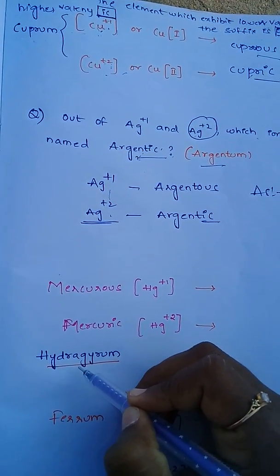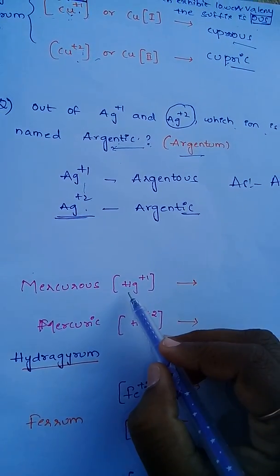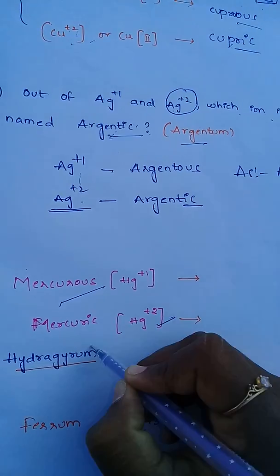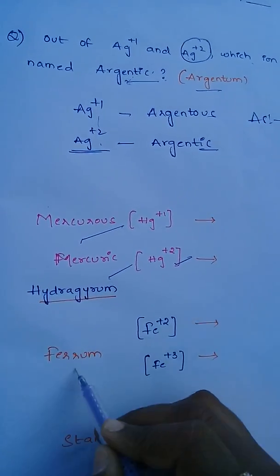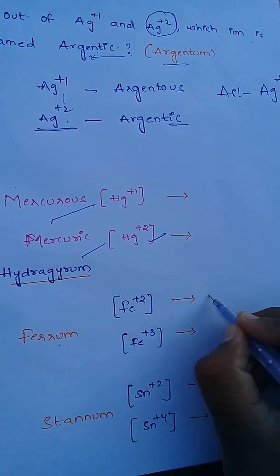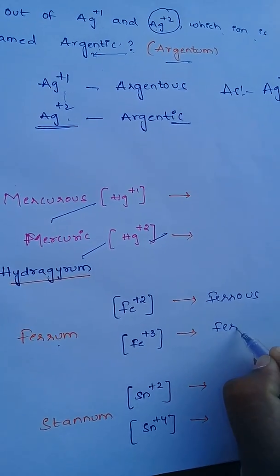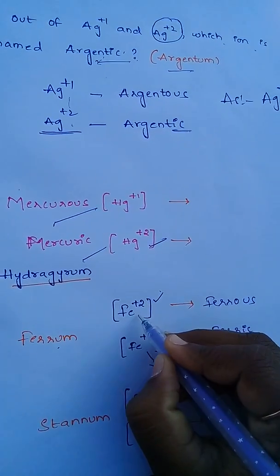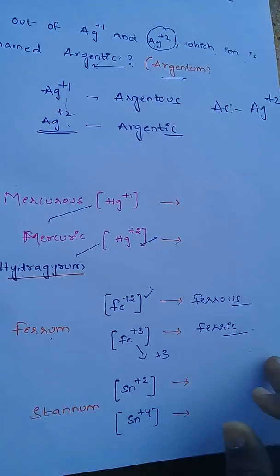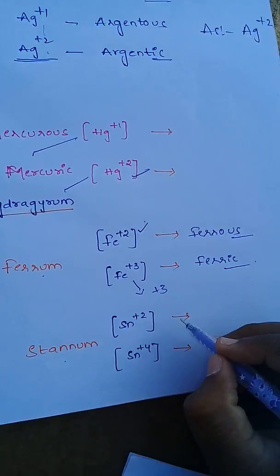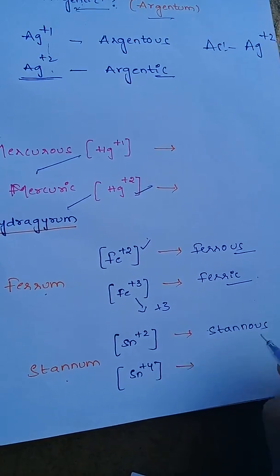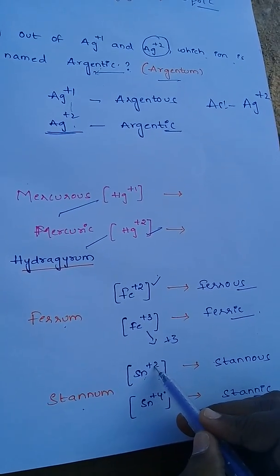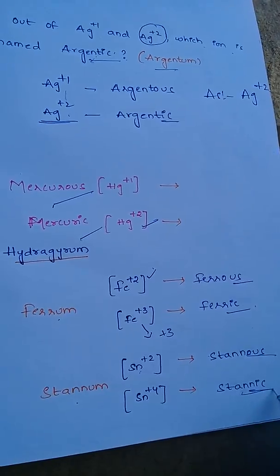The Latin name of Mercury is Hydrargyrum. Mercury with plus one oxidation state is called Mercurous, and higher oxidation state is Mercuric. Iron's Latin name is Ferrum: lower valency plus two gives Ferrous, and higher valency plus three gives Ferric. Tin's Latin name is Stannum: lower valency gives Stanous, and higher valency takes the -ic suffix.